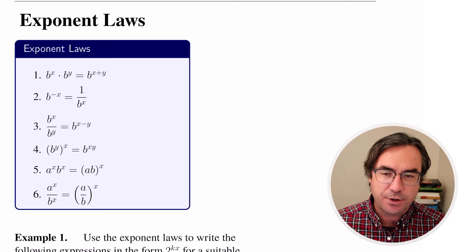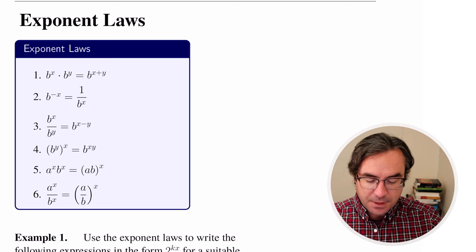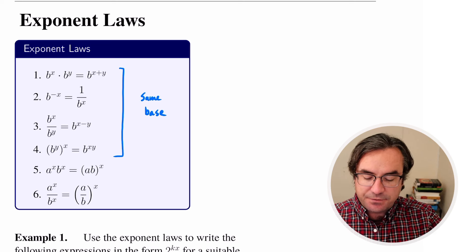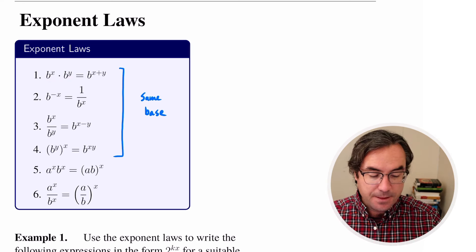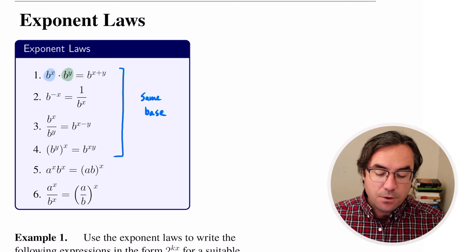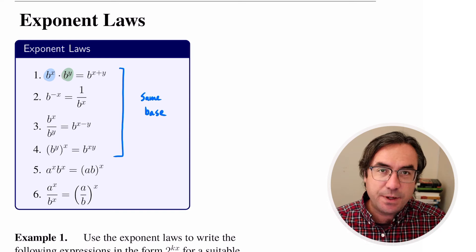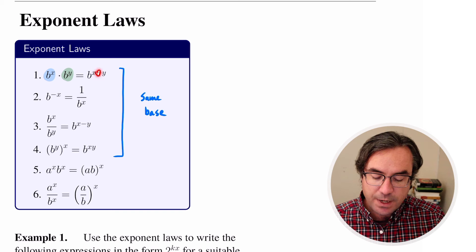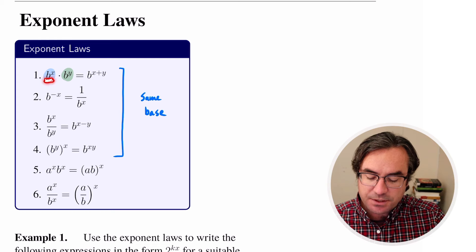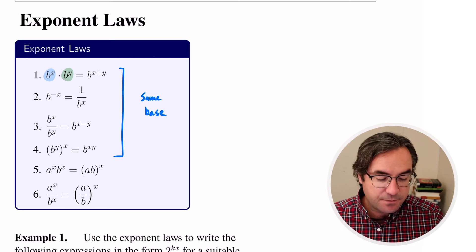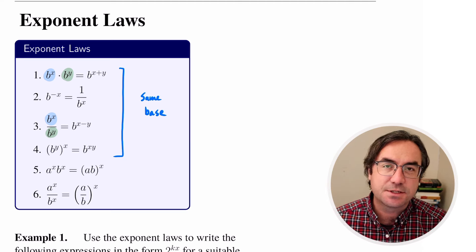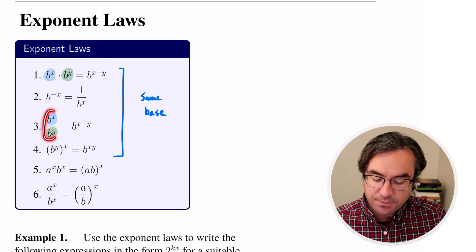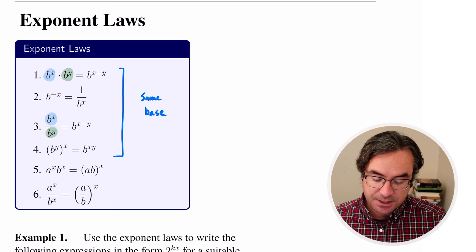For exponential functions, we have some algebraic laws we can use to simplify or rewrite expressions. The first four tell us what to do if we have the same base. If we have b raised to the x times b raised to the y, that multiplication becomes addition inside the exponent — so we add the exponents and combine into a single exponential. This only works if the base term is the same. Similarly for division: if we have two exponential terms with the same base and we divide them, we subtract the exponents.